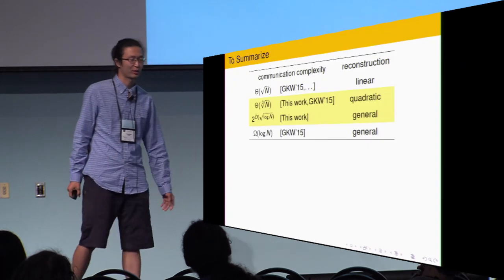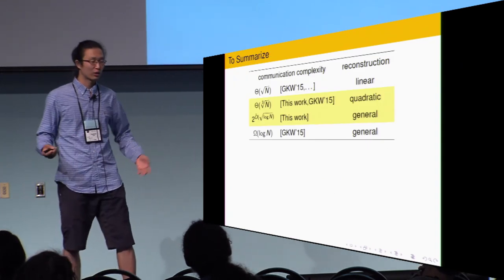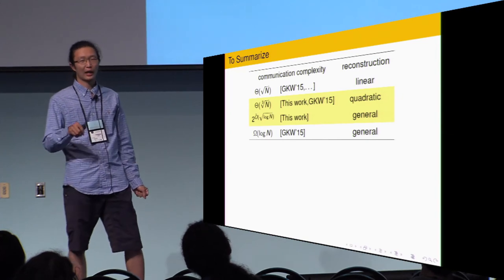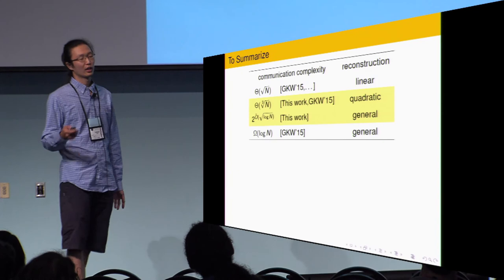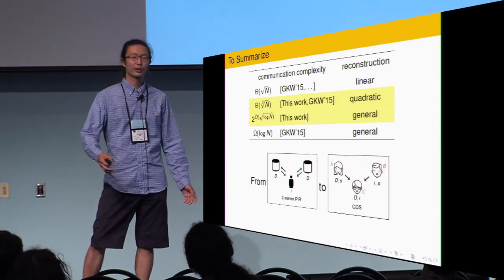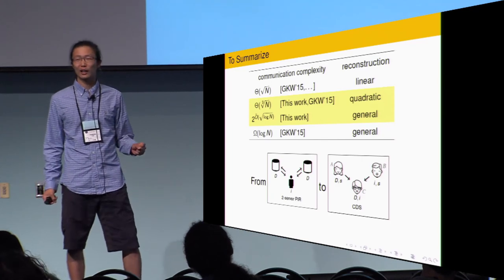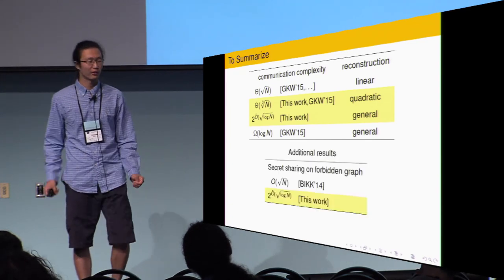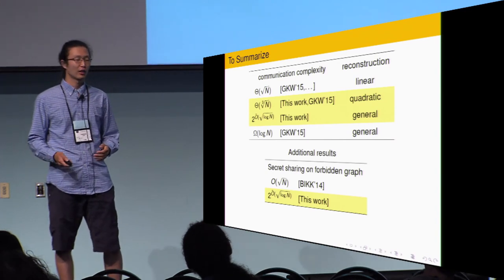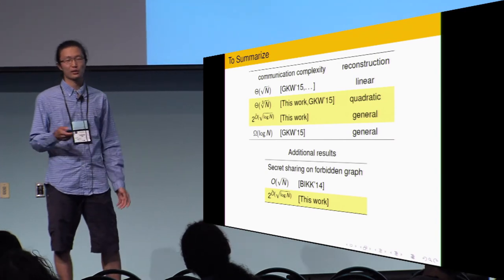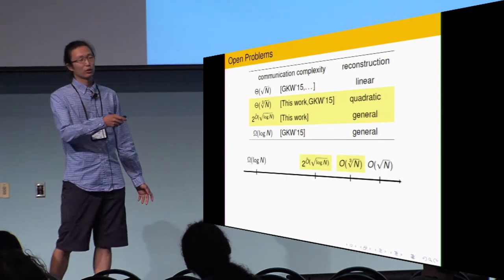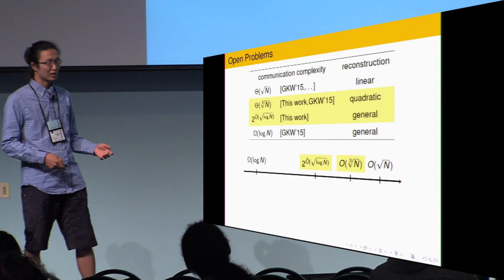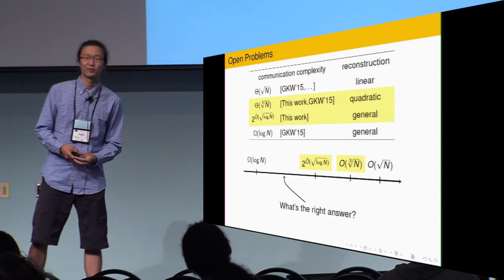To summary, we get two new CDS schemes. One with cube root n communication complexity, which also tight for quadratic reconstruction. One with subpolynomial communication complexity. The technique borrowed from PIR. If you have a new PIR, it's very likely you can also transform it to a better CDS. And if you know forbidden graph, our result also implies better forbidden graph, also implies better secret sharing schemes on forbidden graph. Also, there used to be exponential gap here. We somehow narrowed it down, but there's still room left, and the big question is, what's the right answer? Thank you very much.